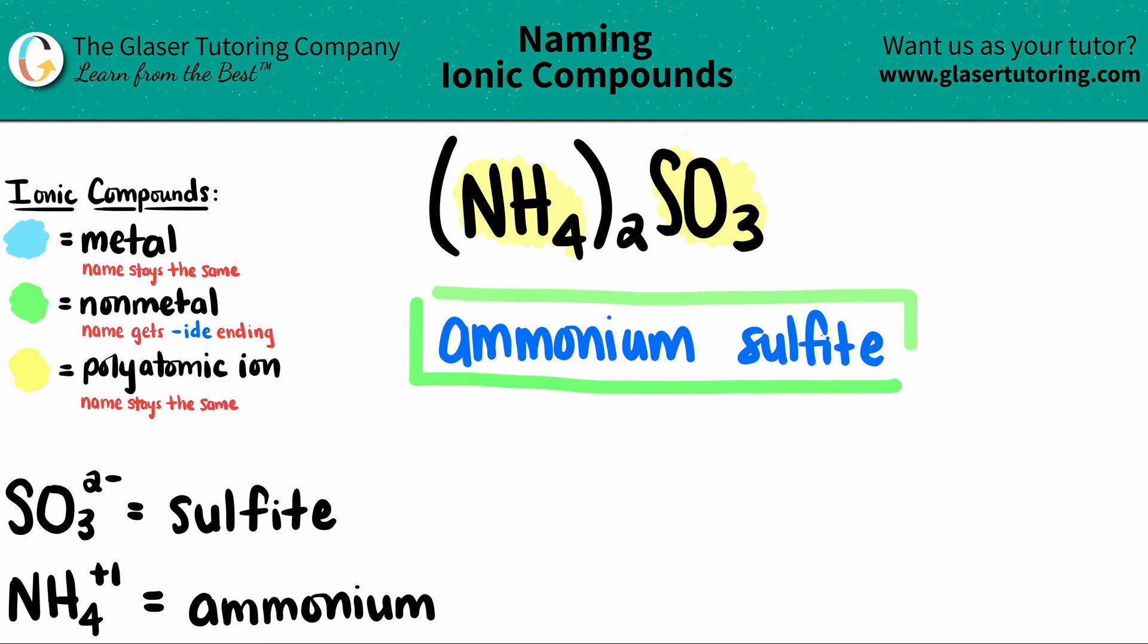So this is the final answer, guys. NH4 2SO3 is ammonium sulfite. And that's it.